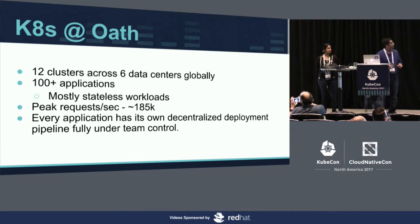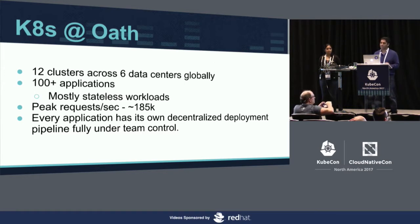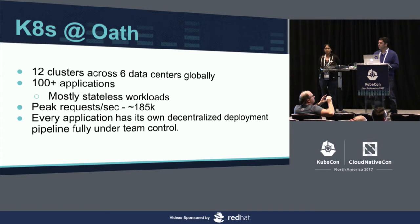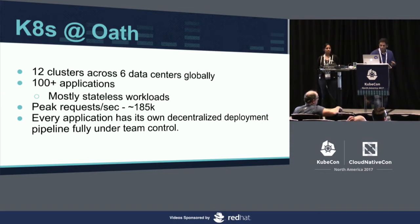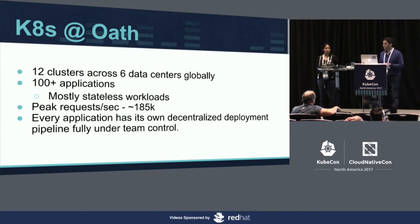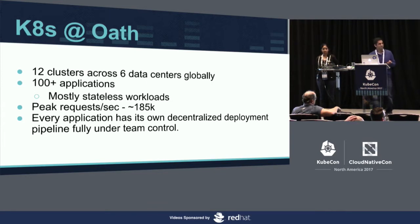Kubernetes at Oath — if you look here, we have 12 Kubernetes clusters across six data centers. We run 100-plus applications. At peak, we do 150k RPS. The Ingress design layer we're going to talk about today does 185k RPS peak. In terms of number of pods, we run more than 10,000 pods. Each pod may have three to four containers — at 40k containers we run.